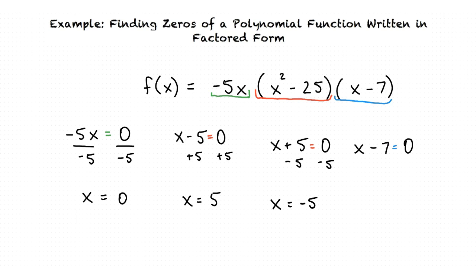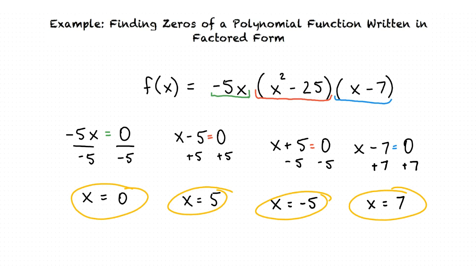Finally, we solve x minus 7 equals 0. We add 7 to both sides and the result is x equals 7. After setting each factor equal to 0, we have found that the real zeros are x equals 0, x equals 5, x equals negative 5, and x equals 7.